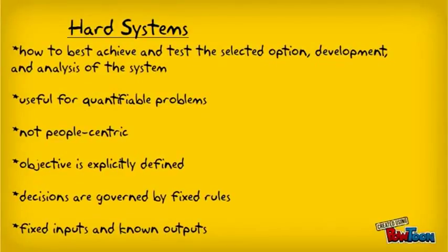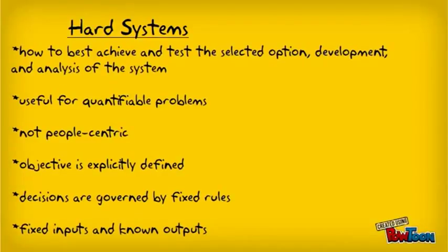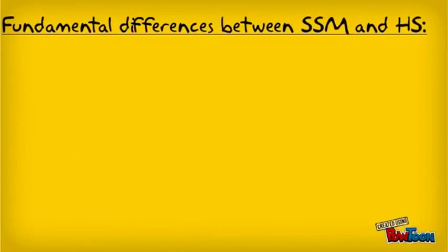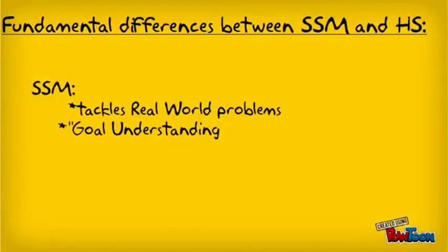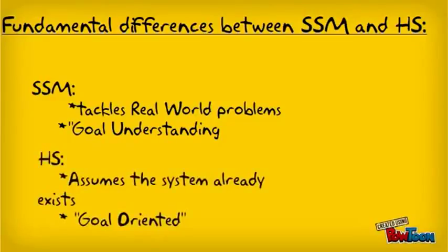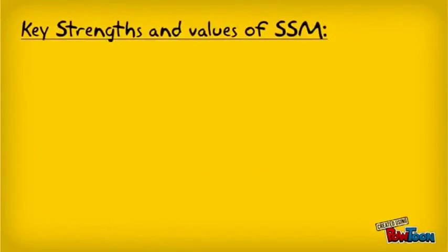Finally, Hard Systems are statistically based on probability with fixed inputs and known outputs. Hard Systems do not take into account unquantifiable variables such as opinions, culture, politics, and many more. The fundamental difference between SSM and Hard Systems is that Soft Systems Methodology tackles real-world problems and is basically goal-understanding, whereas the Hard Systems approach assumes the system already exists out there and is more goal-oriented.